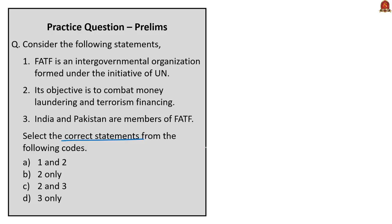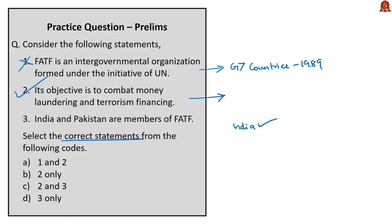The twenty-first question is about FATF. Statement one says it was formed under the initiative of the United Nations — incorrect; it was formed under the initiative of G7 countries in 1989. Statement two says its objective is to combat money laundering and terrorism financing — correct. Statement three says both India and Pakistan are members — incorrect; India is a member but Pakistan is on the FATF grey list, not a member. FATF currently has 39 members: 37 countries and two regional organizations (European Commission and Gulf Cooperation Council). The answer is option B: two only.